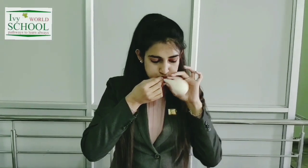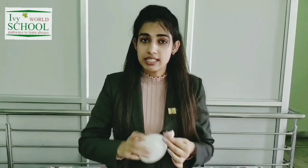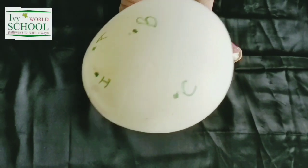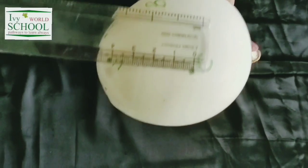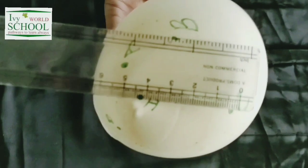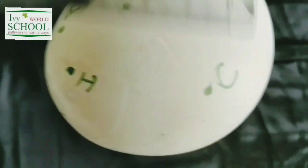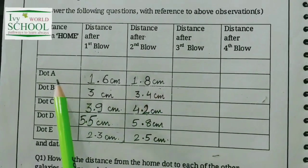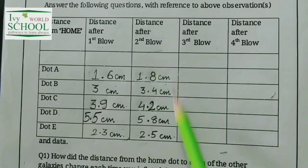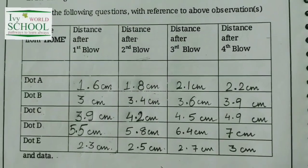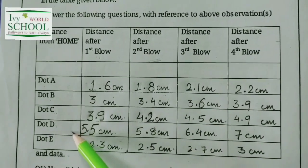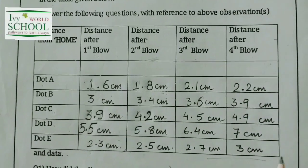Now I will blow air into the balloon for the second time. This is my second blow. Again we are going to measure the distance of dots A, B, C, D, E from galaxy H. The distance of dot C from dot H after the second blow is 4.2 cm. I have noted down the distances of dots A, B, C, and D after the second blow as well. Similarly, I have measured the distances of all these dots after the third and fourth blow also.